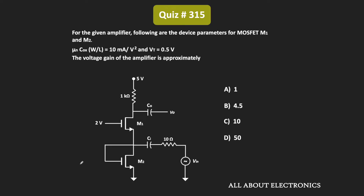Hey friends, welcome to the YouTube channel All About Electronics. In this question, we have been given an amplifier circuit and for the given circuit, we have been asked to find the voltage gain. We have already been given the device parameters for MOSFETs M1 and M2.